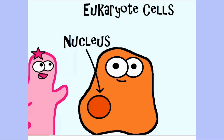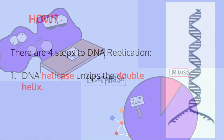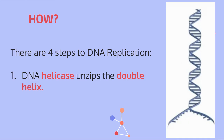DNA replication as we're discussing it happens in eukaryotic cells — cells that have a nucleus. A different process, binary fission, happens in prokaryotic cells and will be discussed later. It's also important to remember that interphase is the longest part of mitosis, because this is where the cell is replicating all its DNA and growing.